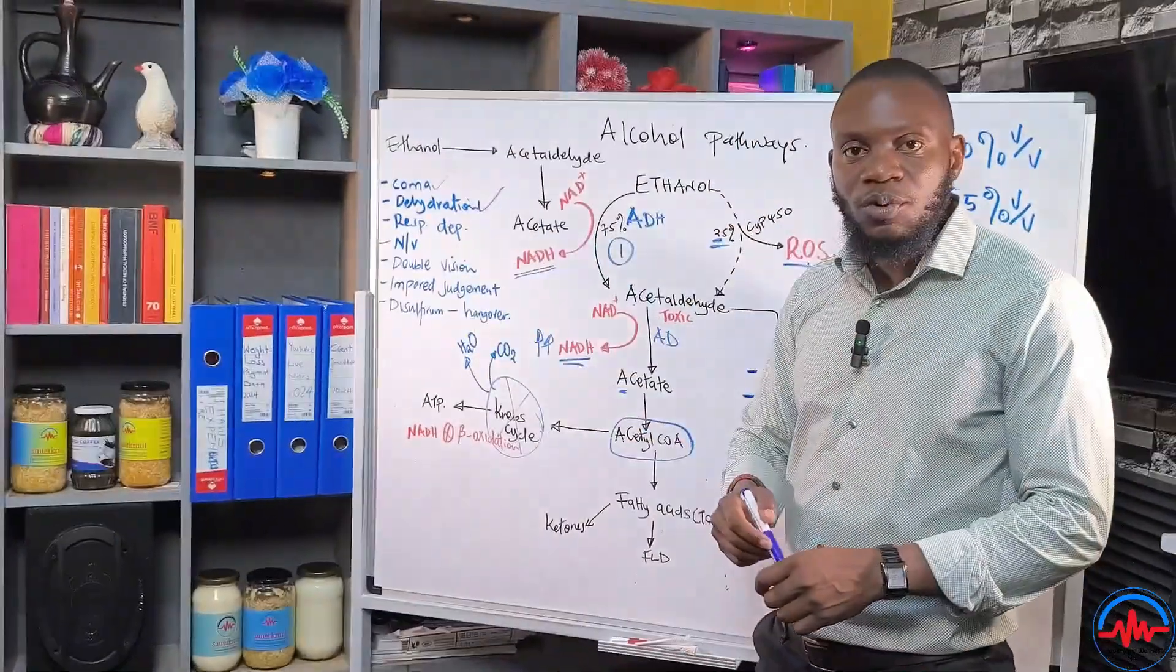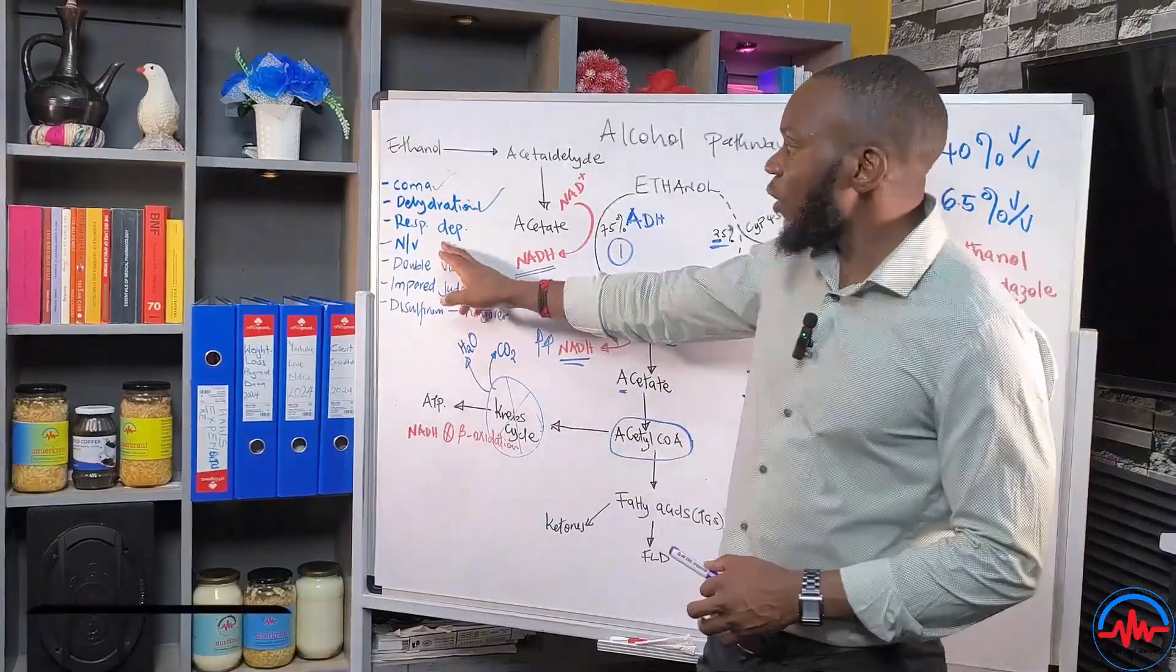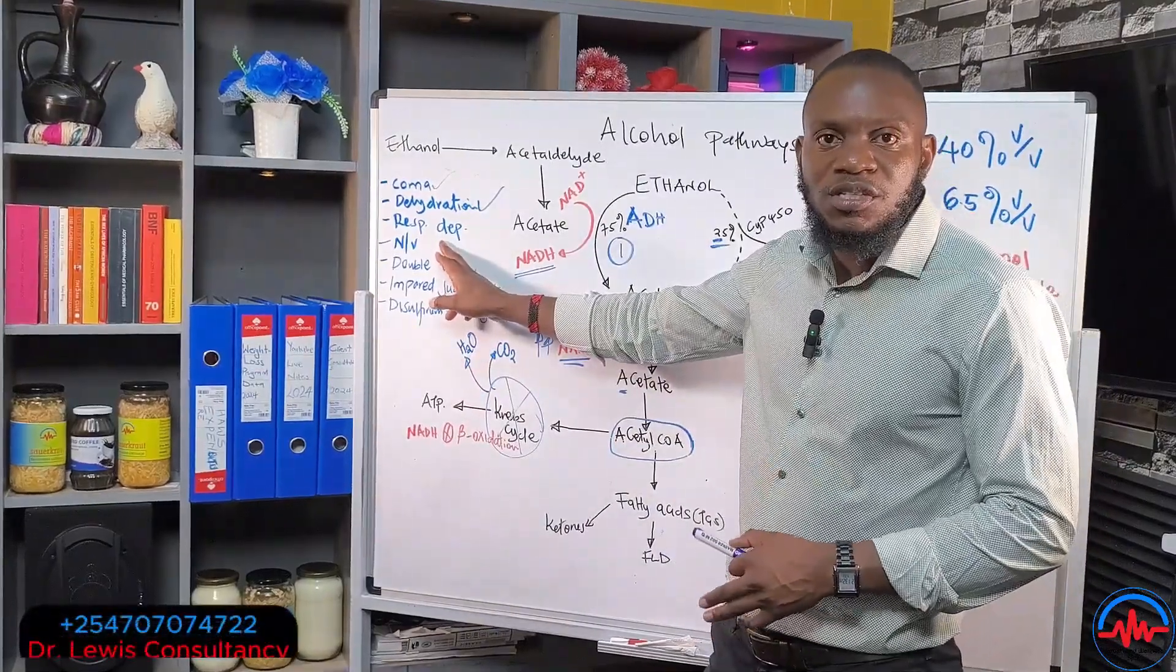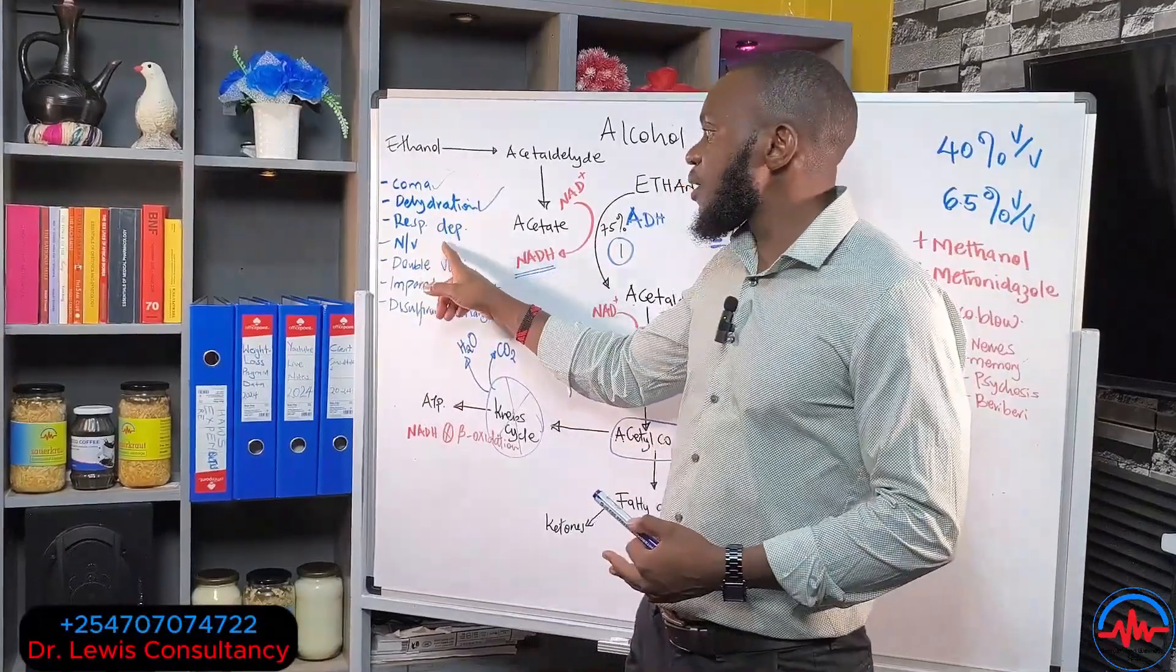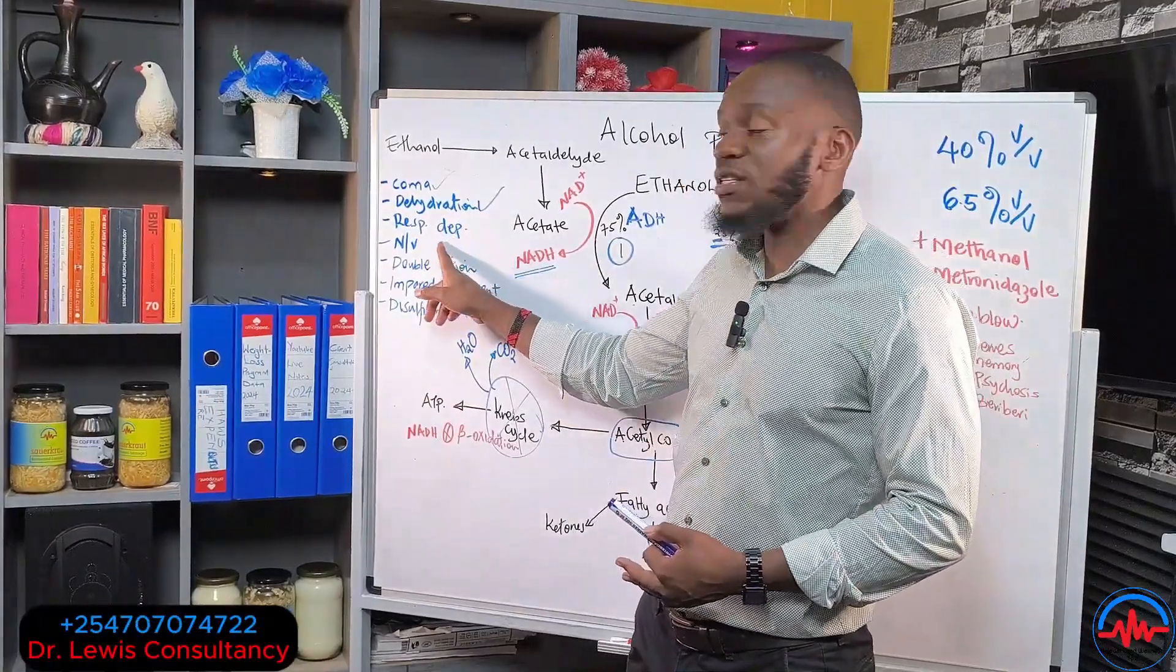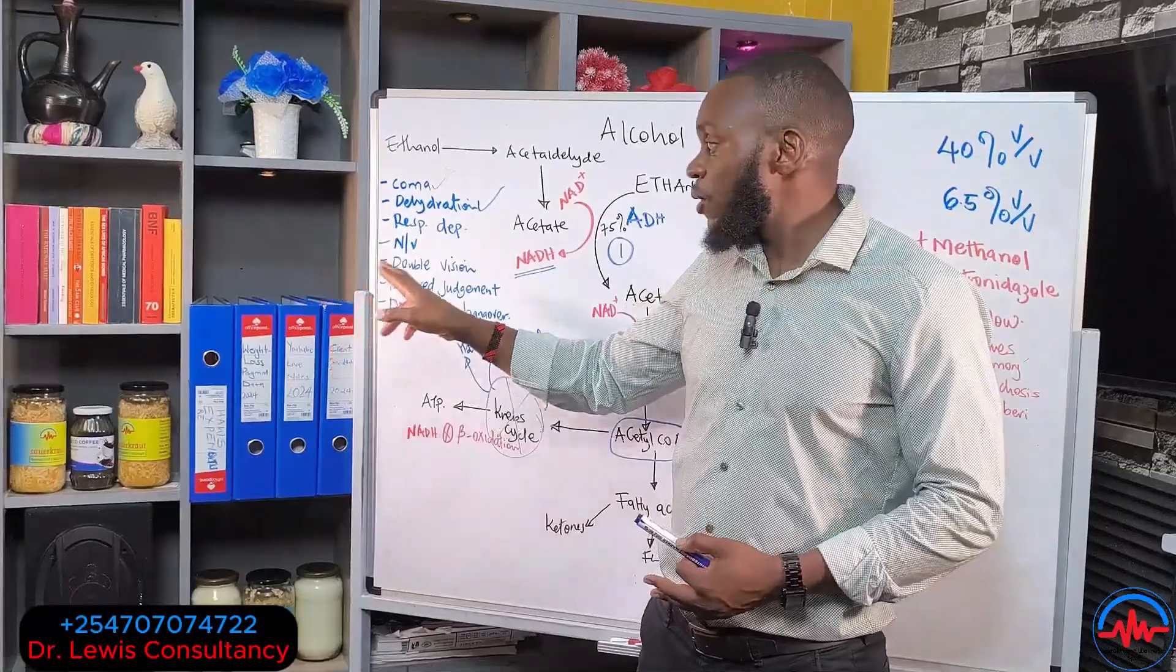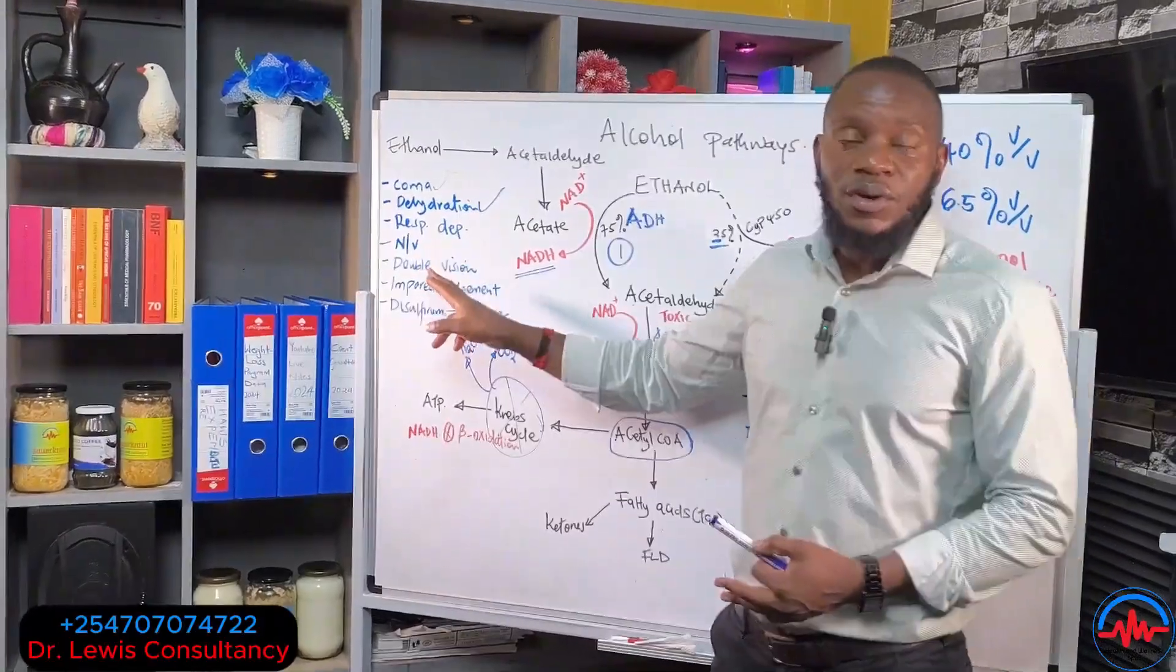Alcohol causes dehydration, therefore kidney problems are coming in. Alcohol can suppress your respiratory centers. When you take alcohol over a long period of time, you will end up suppressing the respiratory centers. Even high levels of alcohol will suppress your breathing centers.